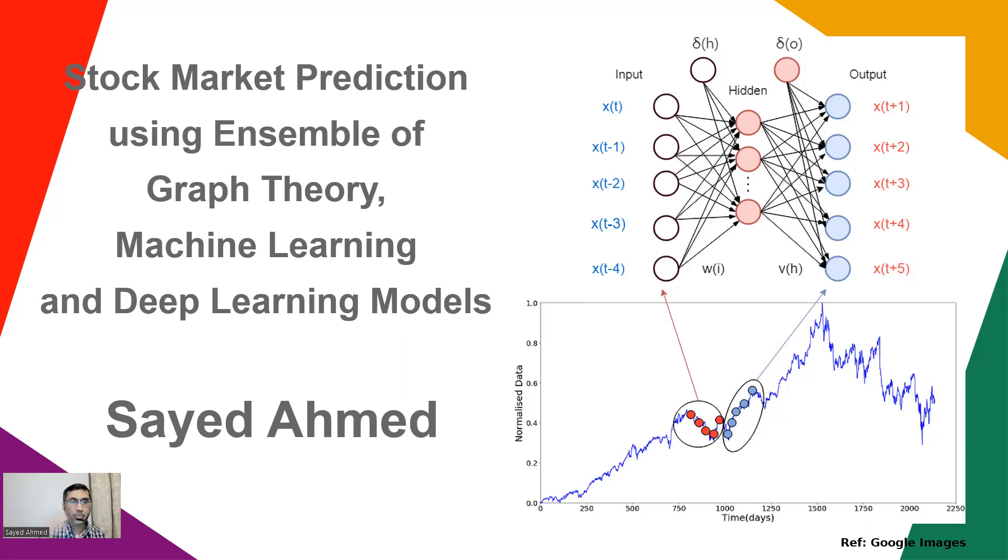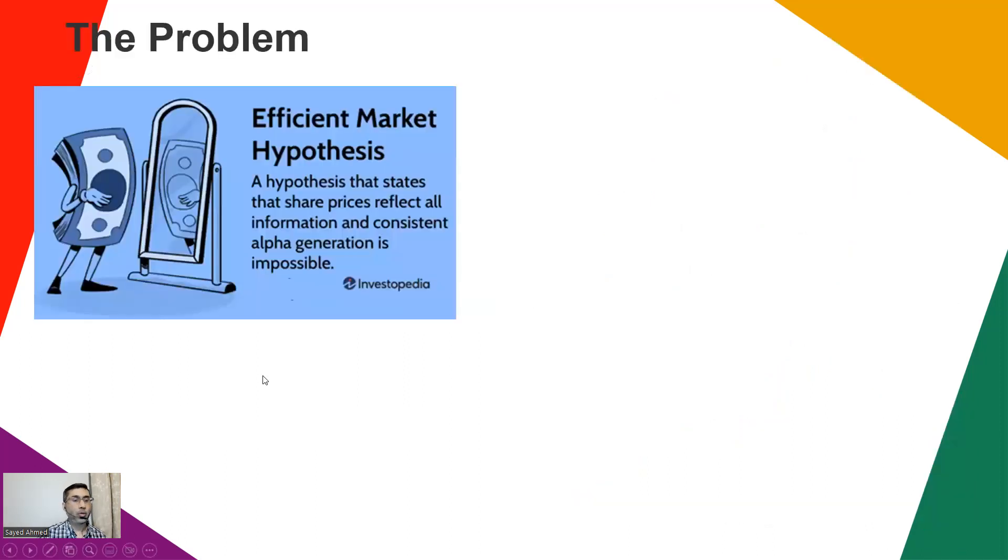So what is the problem that this paper has addressed? You know about the Efficient Market Hypothesis, the cornerstone of modern financial theory. What does it say? It says at any point, a stock has a clear value considering all the different variables.